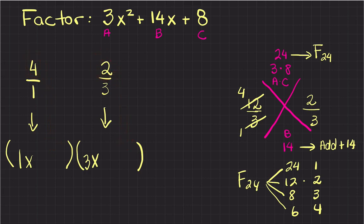So plus 4 and plus 2. Now 1 times x is just x, right? So I can just write this as (x + 4)(3x + 2), and that's my factorization.